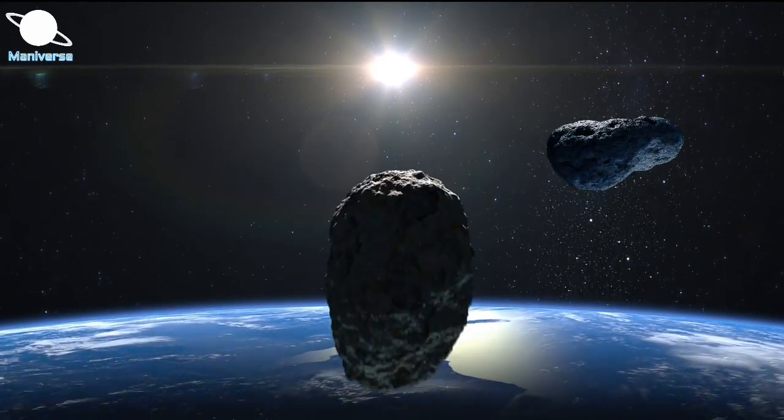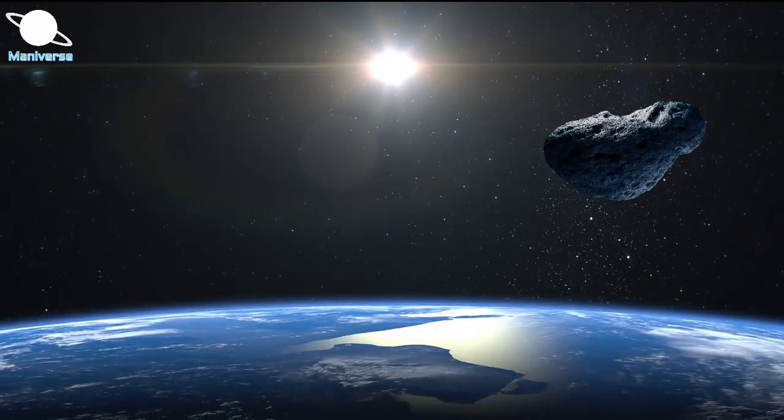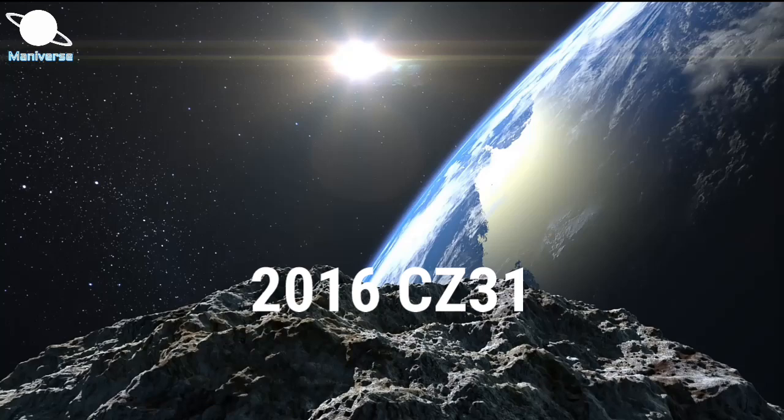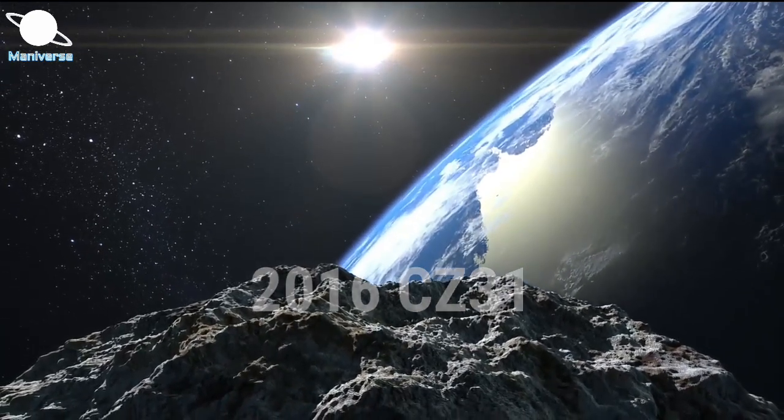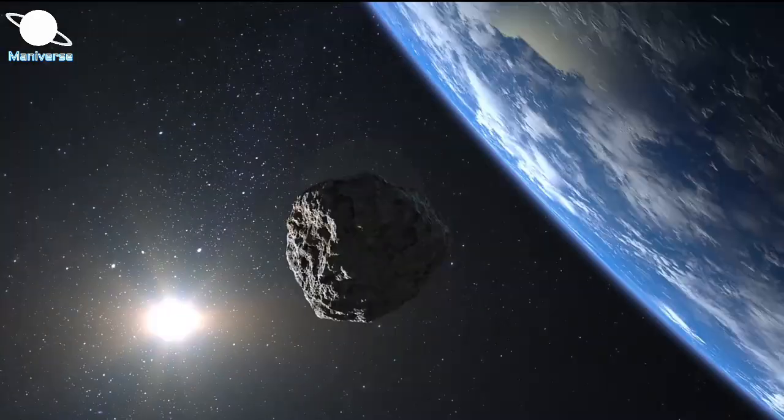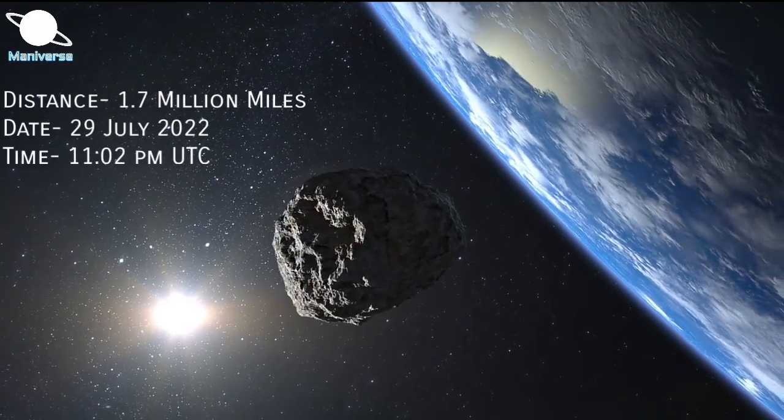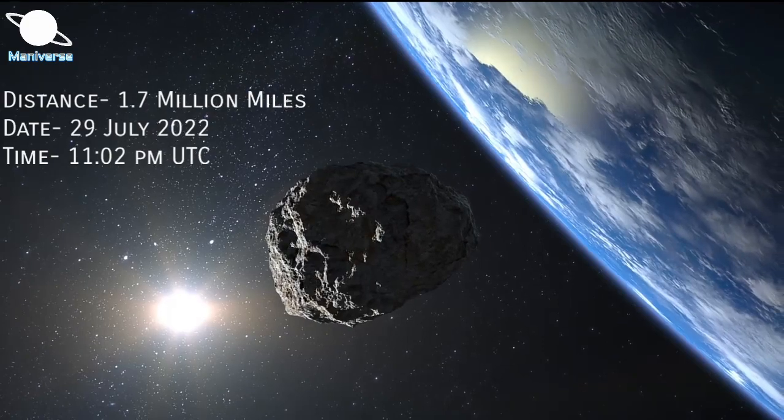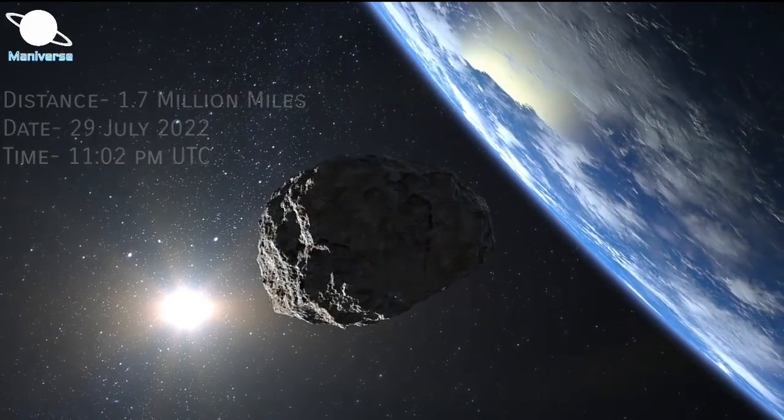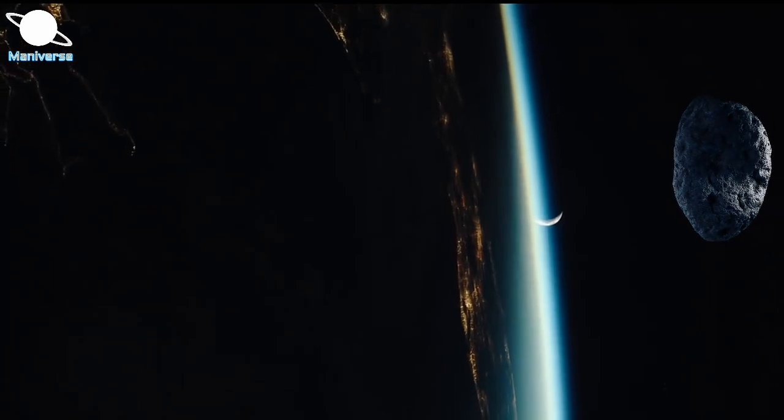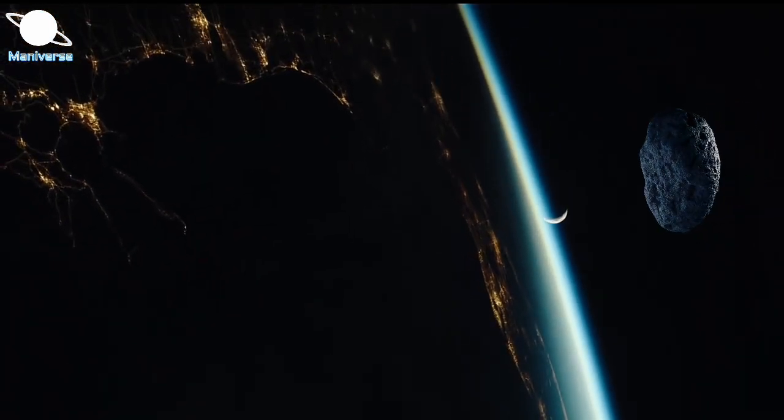The first of the two space rocks to make a close approach is known as 2016 CZ-31. According to the figures from NASA's CNEOS database, this asteroid will come close at a distance of 1.7 million miles to our home planet on 29 July at 11.2 pm UTC. While 1.7 million miles may look like a large distance on the scale of our solar system, but it's relatively close.